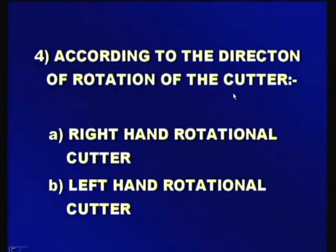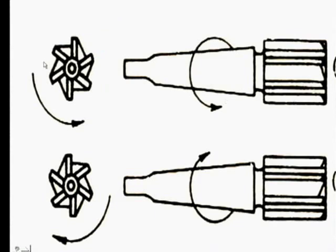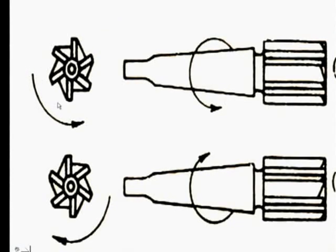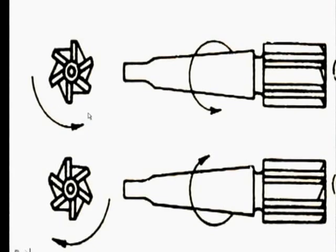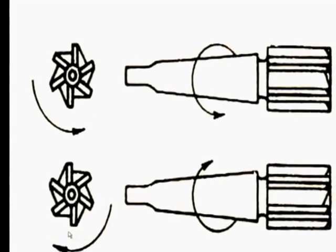The fourth classification is according to the direction of rotation of the cutter — whether it is a right hand or left hand rotational cutter. When you see from the end of the cutter, when the cutter rotates in the anticlockwise direction, it is a right hand rotational cutter. When the cutter rotates in the clockwise direction, it is a left hand rotational cutter.